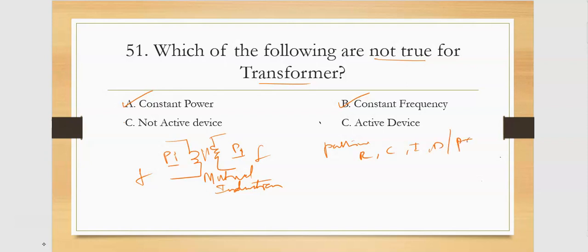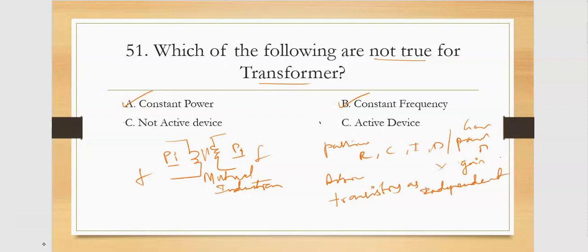Passive devices do not generate power or gain. Active devices — like transistors and independent sources — can generate power. The transformer does not generate power; it is a static device that works on mutual induction principle. Therefore, the transformer is NOT an active device — that is the answer that is not true.